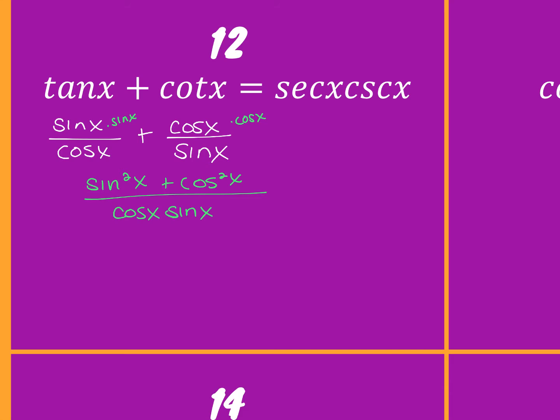Then what? What's sine squared plus cosine squared? One. One over cosine x times sine of x. So I can either split these into two separate fractions — they'd both get one over them — or I can simply move these to the numerators, making them their reciprocal. The reciprocal of cosine is secant, and the reciprocal of sine is cosecant.